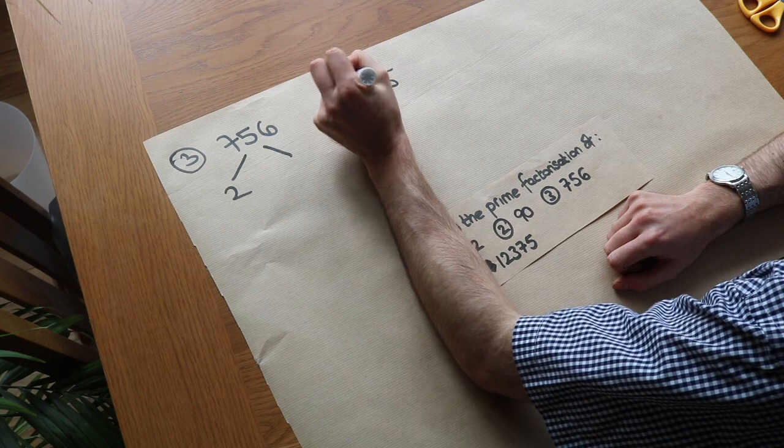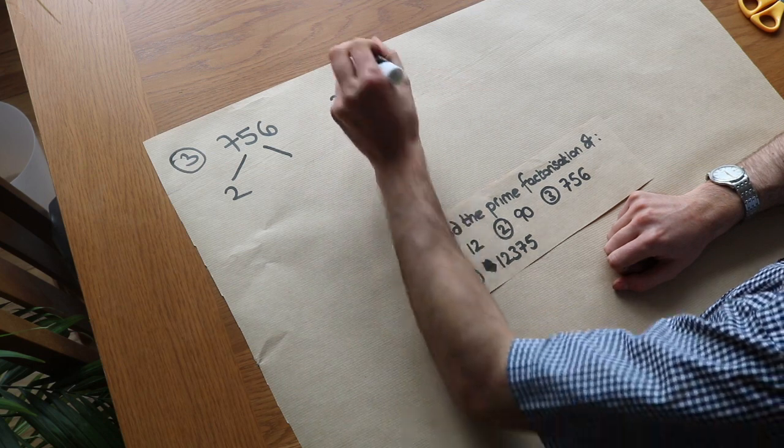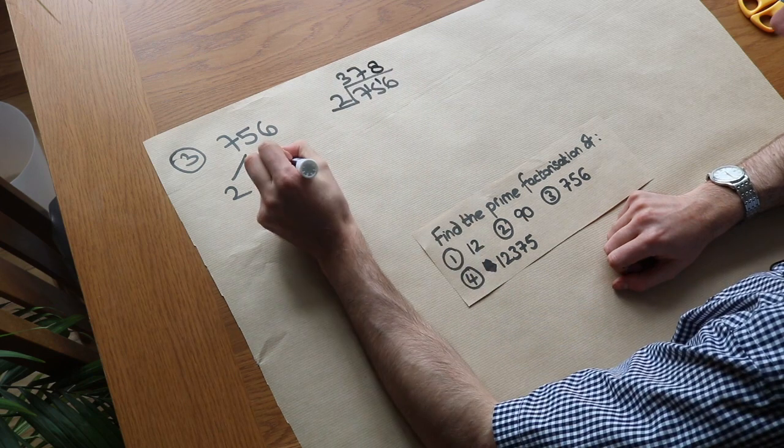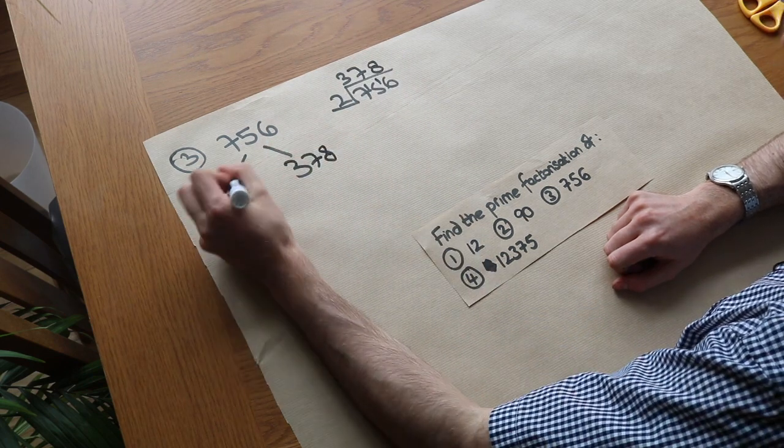Or 2 goes into 7, 3 times remainder 1. 2 goes into 15, 7 times remainder 1. And 2 goes into 16, 8 times. So we can put that there. Now that is prime, the 2.